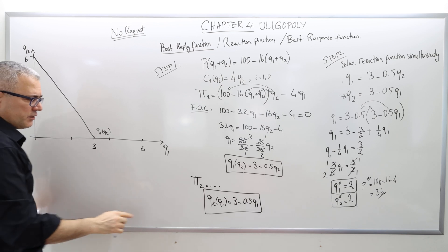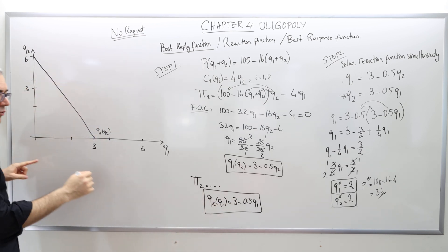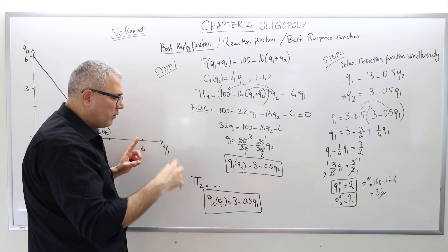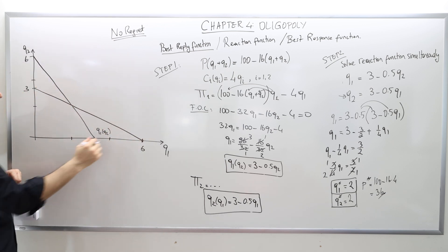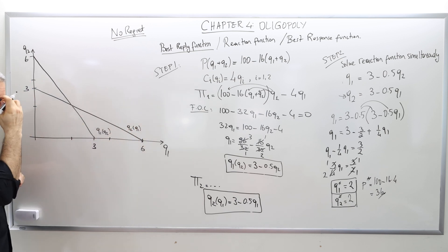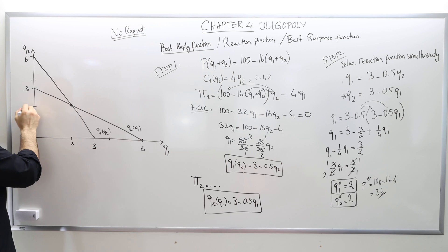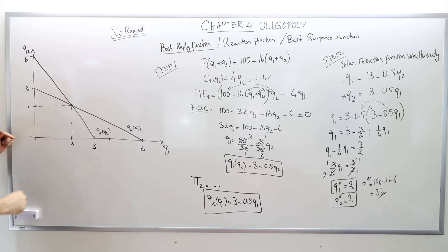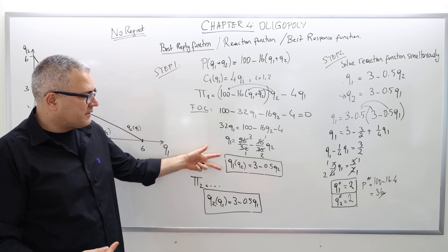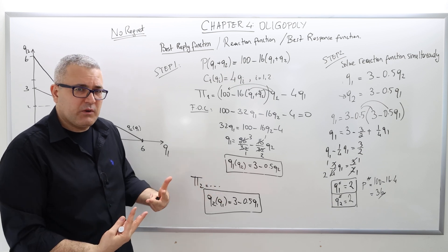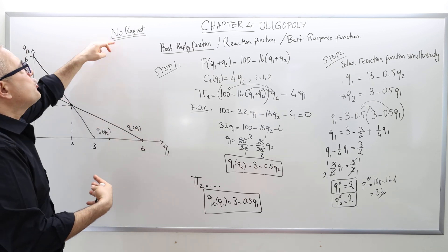Now drawing the best response function of firm 2: if Q1 is 0, Q2 equals 3 — that's the vertical intercept. And when Q2 is 0, solving 0.5·Q1 = 3 gives Q1 = 6. These are the intercepts, and because the function is linear, connecting them gives firm 2's best response function, Q2, Q1. They intersect at some point — I claim this is the Cournot point at (2, 2). The point of intersection satisfies both equations simultaneously, meaning you solve them simultaneously to find it.